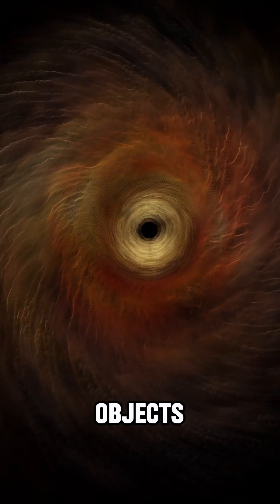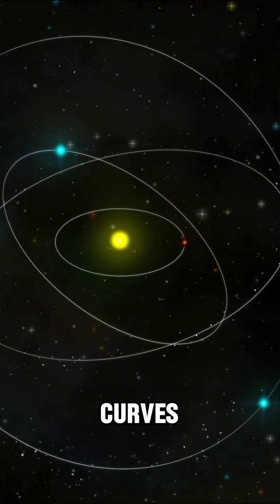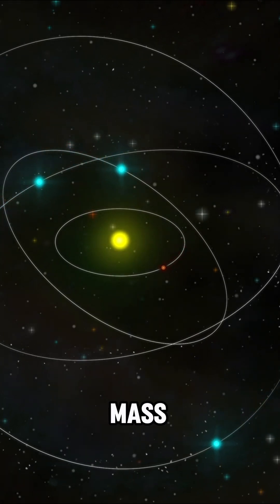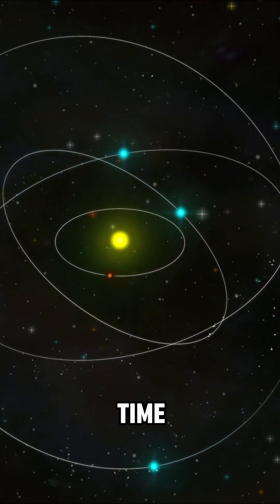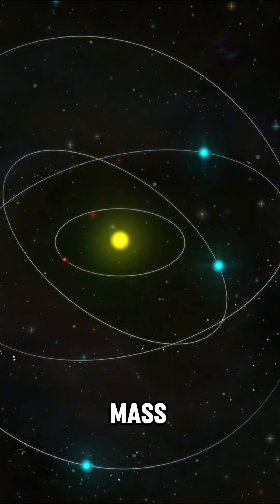It's as if objects are naturally trying to follow the curves created by massive bodies. So always remember, mass tells spacetime how to curve and spacetime tells mass how to move.